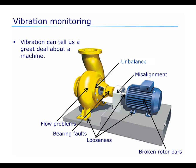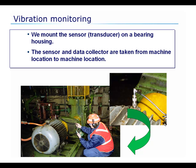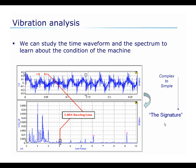Vibration monitoring can tell us a lot about the machine, from flow problems to bearing faults to looseness, unbalance, misalignment, and even electrical faults like broken rotor bars. Typically, we mount the sensor or transducer on a bearing housing to get the best mechanical interface, and the sensor and data collector are then taken from machine location to machine location. We study the time waveform — that's the raw signal that comes in from the accelerometer. It takes a very experienced analyst to look at a time waveform and deduce what might be the machine problems. So typically, we go from complex to simple and convert the time waveform to a pattern or a signature — FFT, fast Fourier transform, as shown here — and then we look for certain fault frequencies that will help us pinpoint the problem.